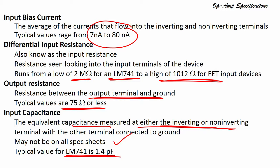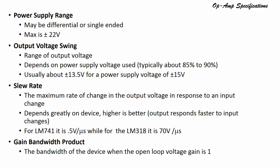Input capacitance is the equivalent capacitance measured between either the inverting or non-inverting terminal and the other terminal connected to ground. The typical value of input capacitance for the LM741 is 1.4 picofarads.